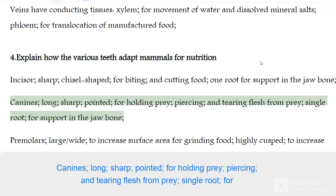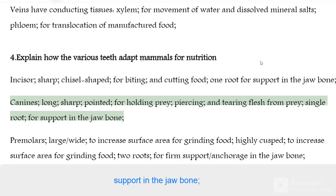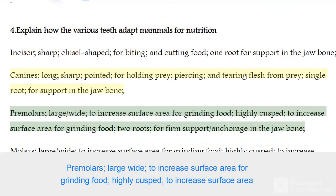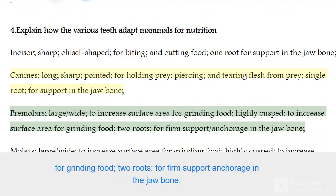Canines are long and sharp-pointed for holding prey, piercing and tearing flesh from prey, with a single root for support in the jaw bone. Premolars are large and wide to increase surface area for grinding food, and highly cusped to increase surface area for grinding food.